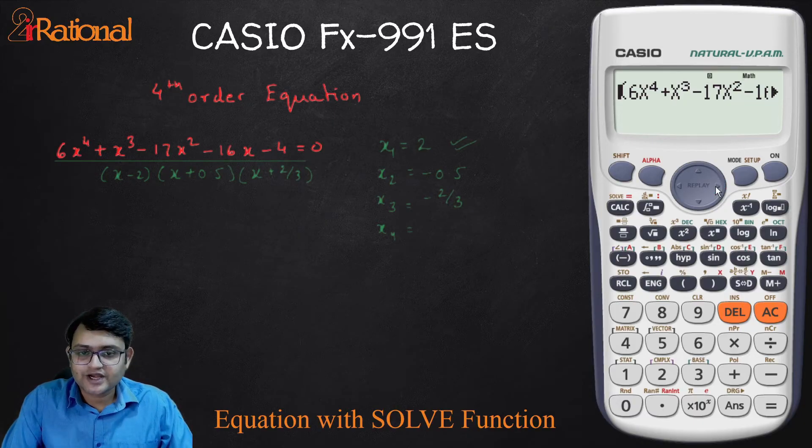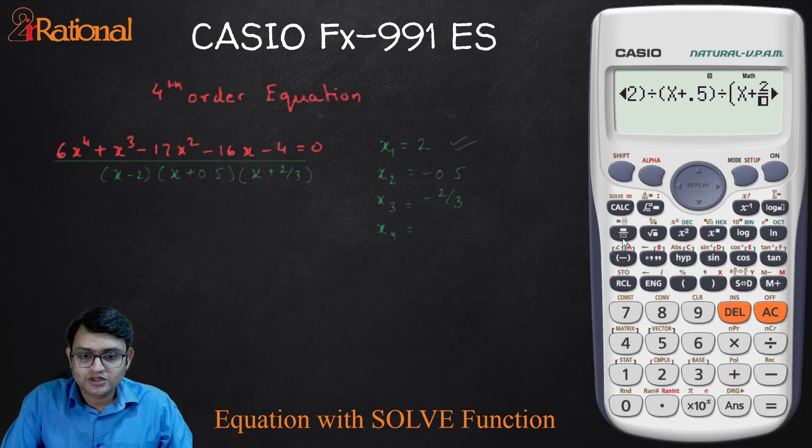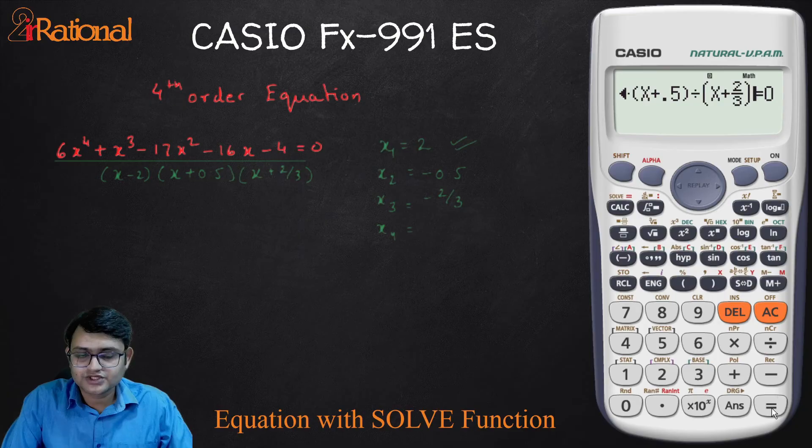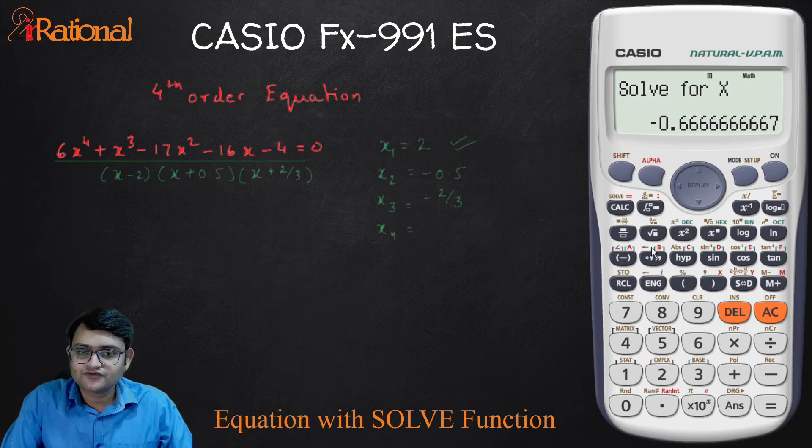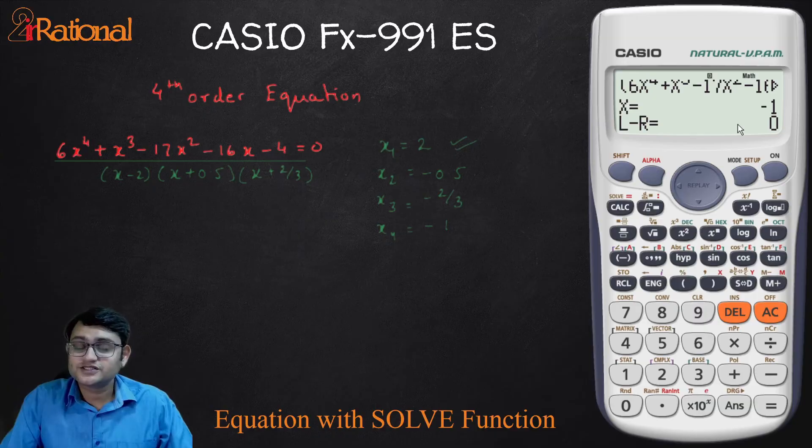Again, side arrow. So divide by bracket alpha X plus 2 by 3. Bracket close. Then shift solve. Equal to. And the last is minus 1. So this is the last root.